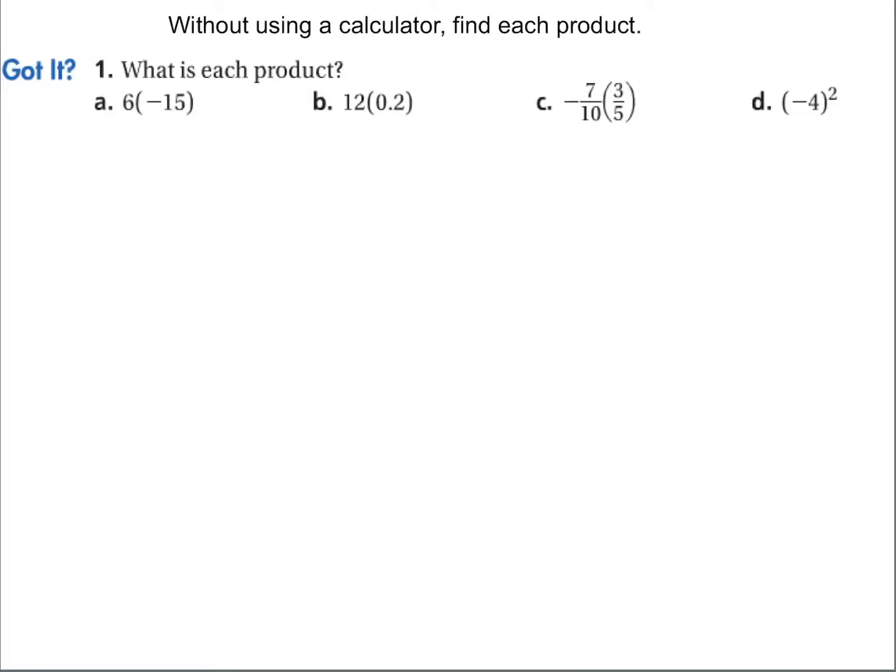Please try not to use a calculator when you do these. See what you can figure out. What is the product of positive 6 times negative 15? Different signs gives me a negative answer. 6 times 15 gives me 90.